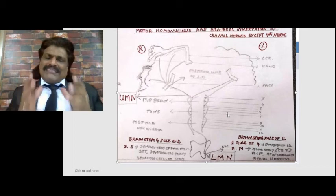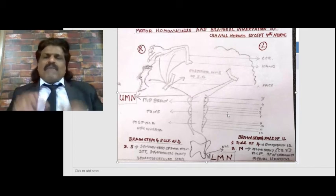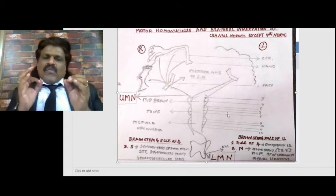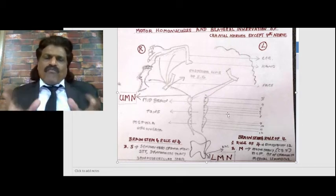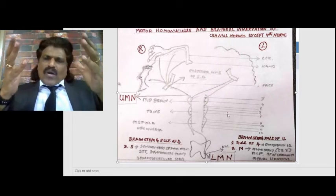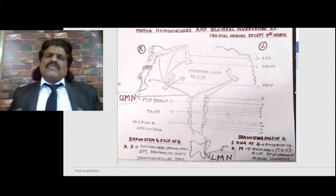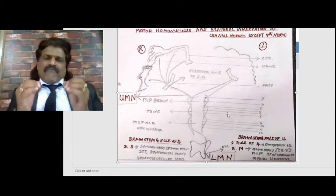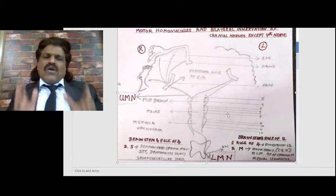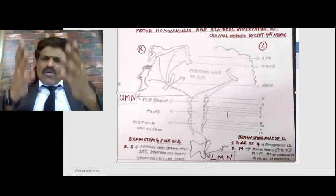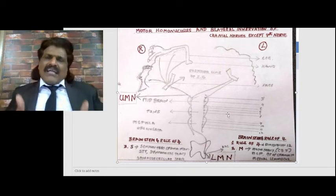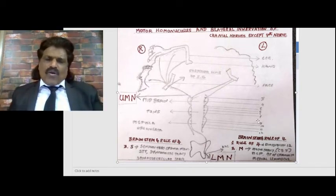There are so many tracks and cranial nerves in the brainstem. If we know one rule - the rule of four - we can know almost all the structures present in the brainstem. It is a very fascinating rule by which we can remember almost all the structures and cranial nerves.